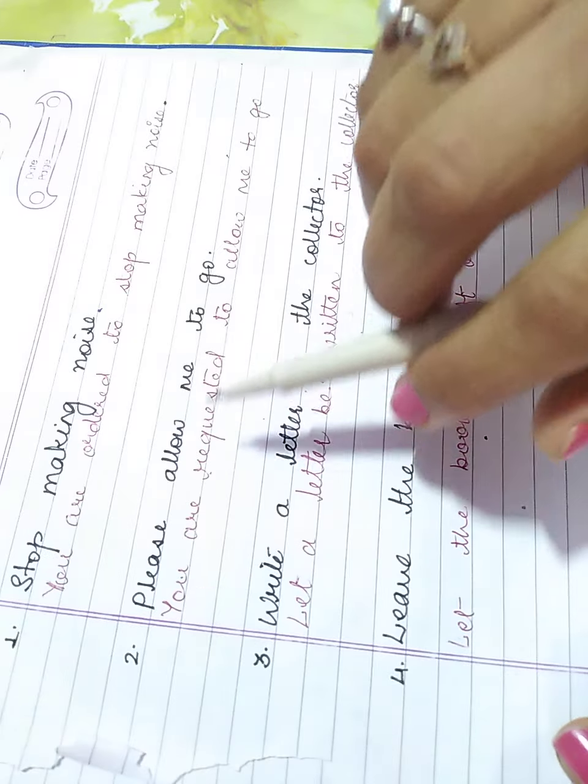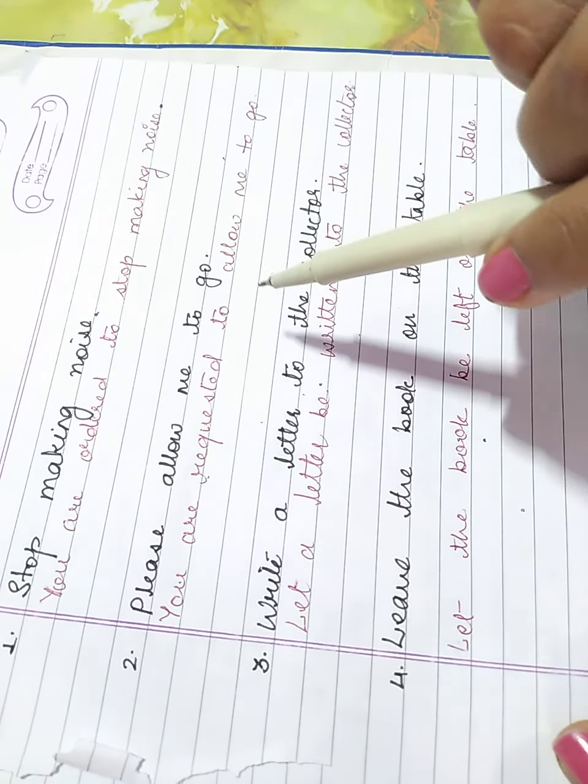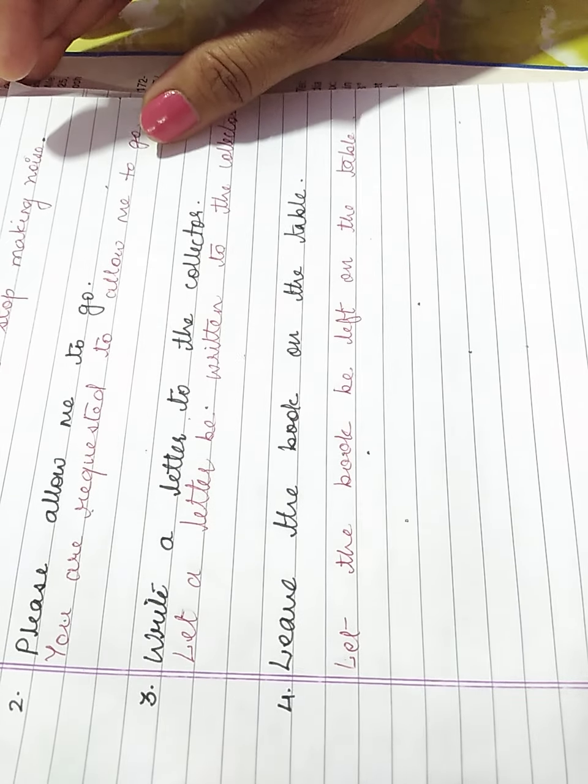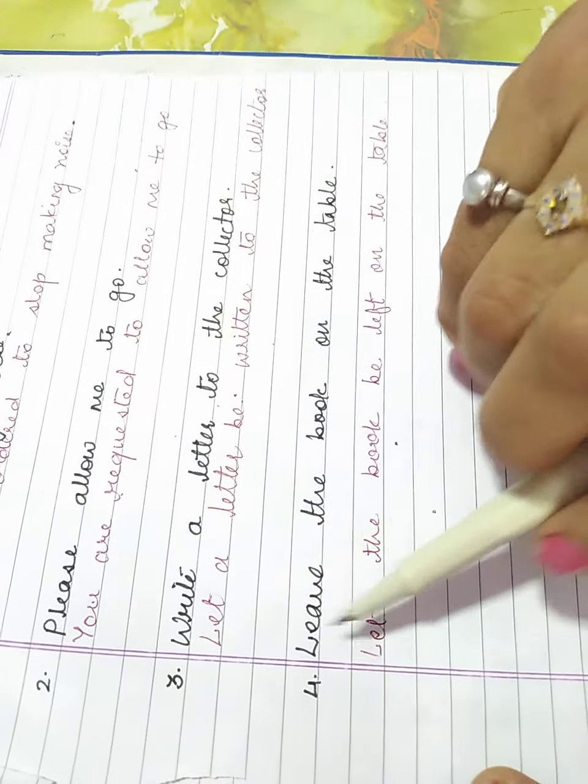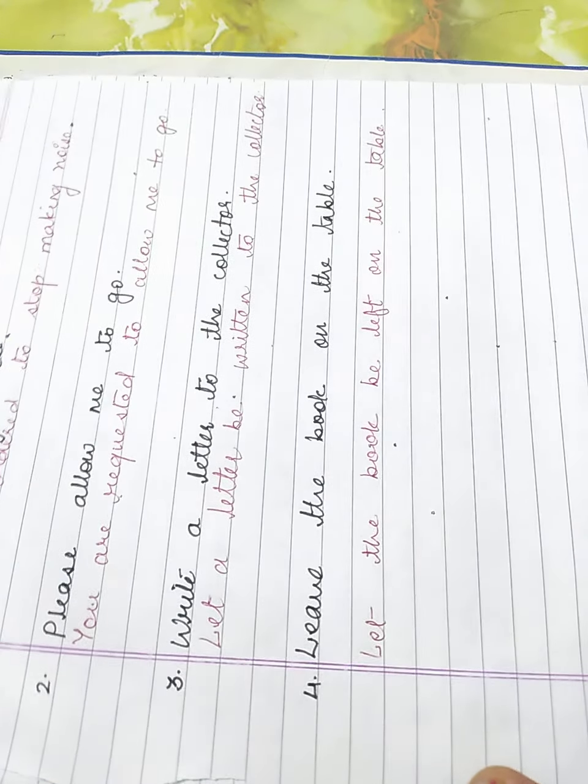Second, please allow me to go. You are requested to allow me to go. Third, write a letter to the collector. Let a letter be written to the collector.